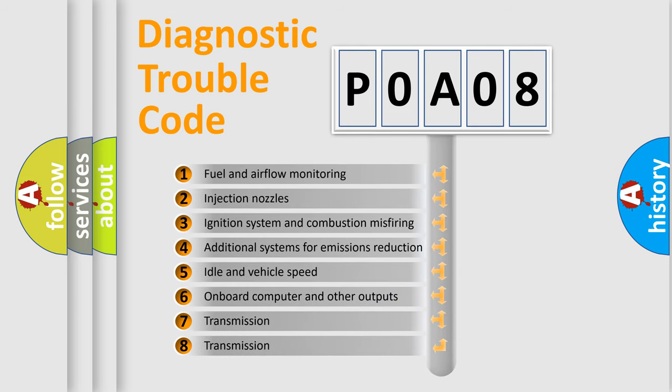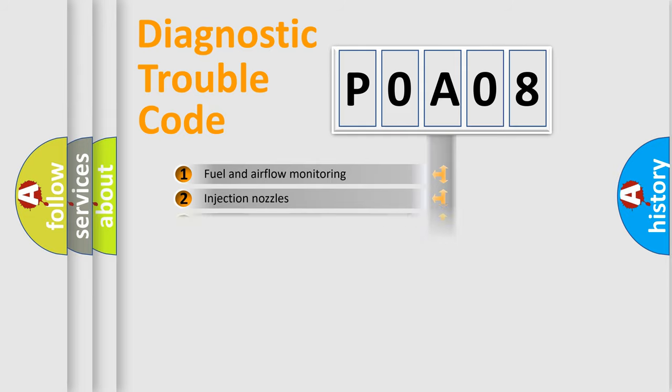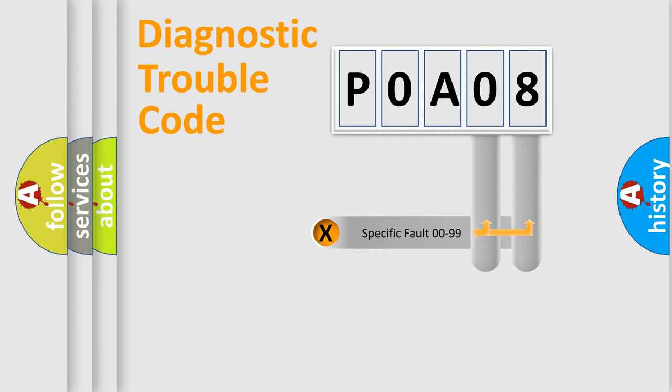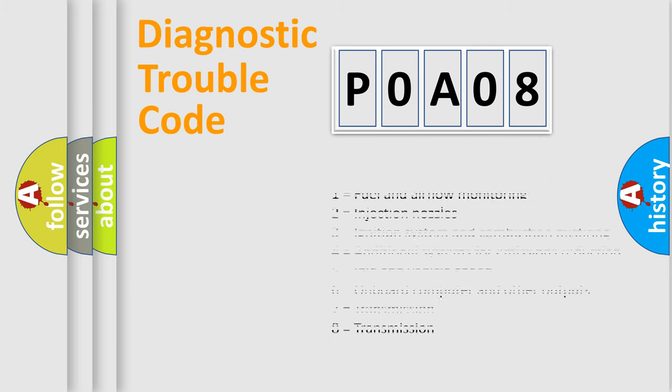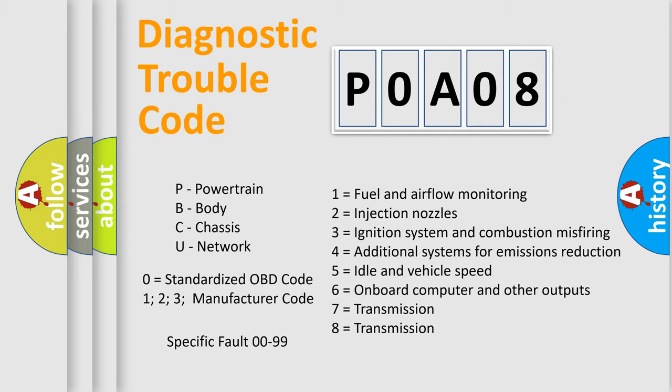The distribution shown is valid only for the standardized DTC code. Only the last two characters define the specific fault of the group. Let's not forget that such a division is valid only if the second character code is expressed by the number zero.